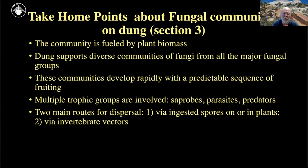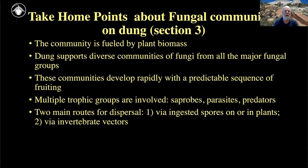The take-home points about fungal communities on dung are: the community is fueled by plant biomass; dung supports diverse communities of fungi from all major fungal groups; these communities develop rapidly in a predictable sequence of fruiting, though we don't really know whether that's true succession yet; there are multiple trophic levels involved — saprobes, parasites, predators, and more; and there are two main dispersal routes — one via spores shot onto plants and then ingested, and the second via vectoring by invertebrate vectors.